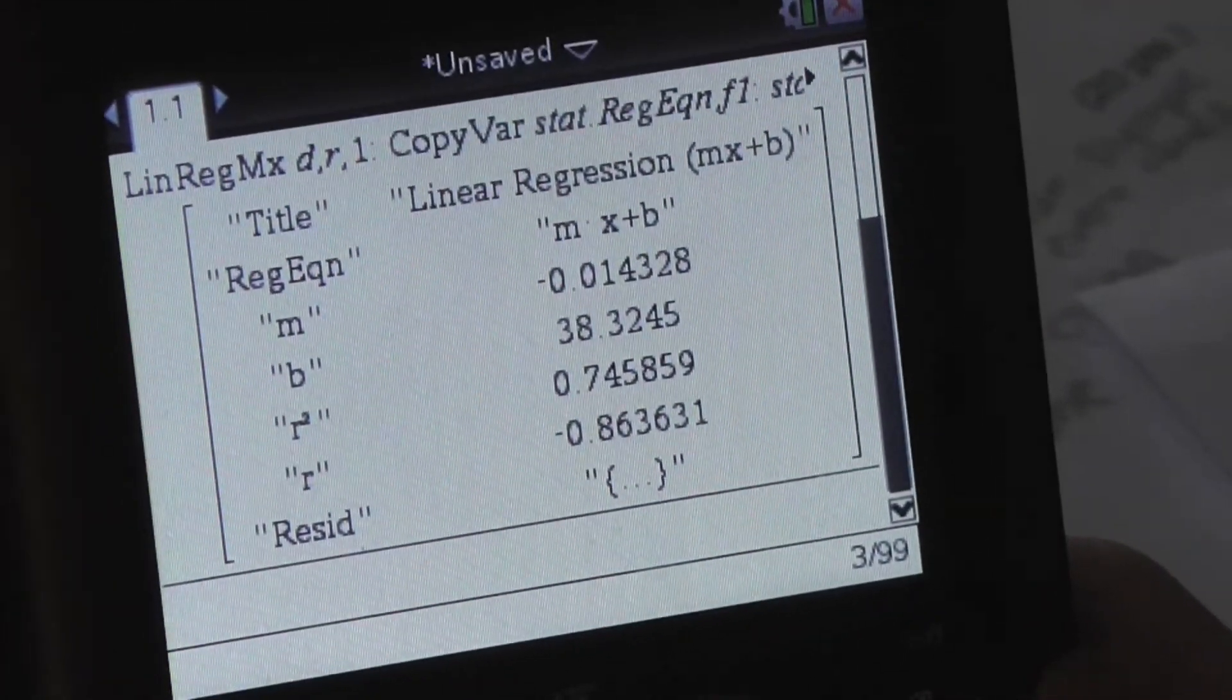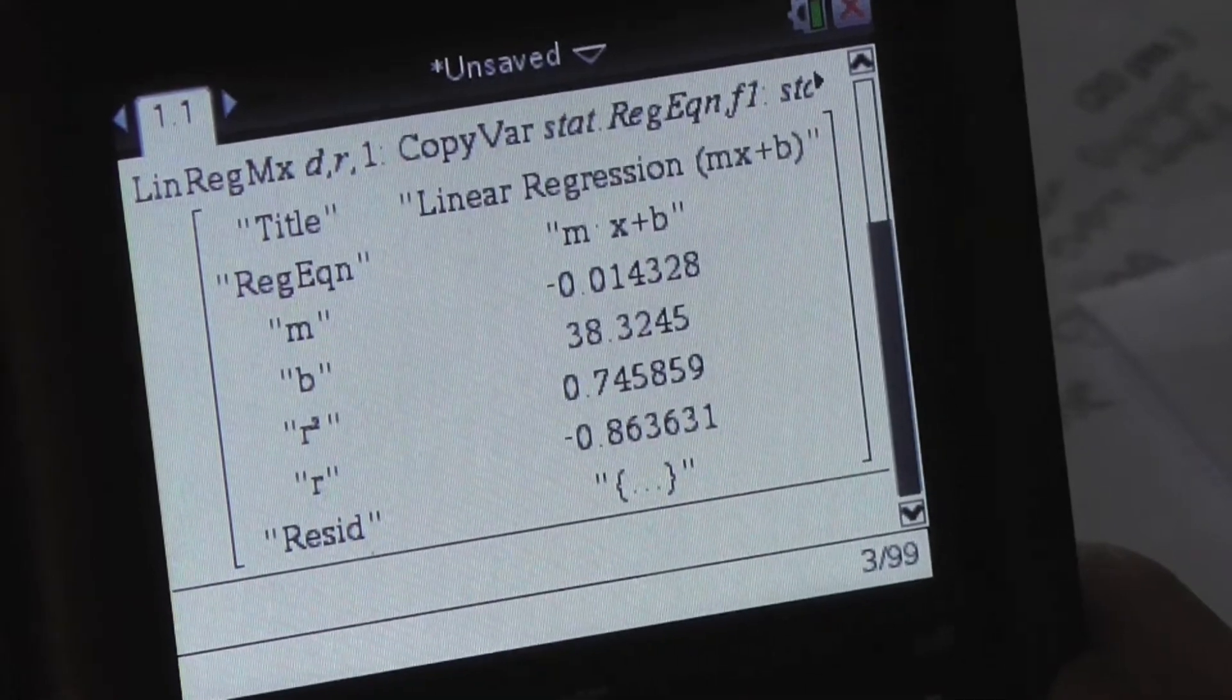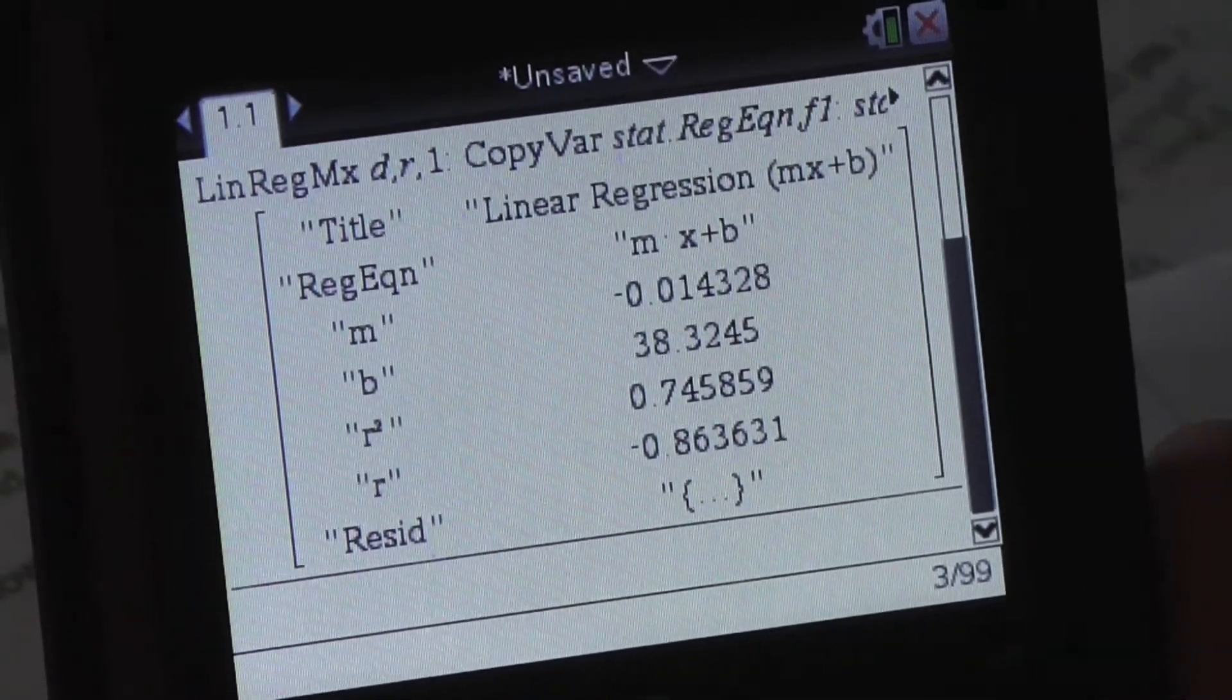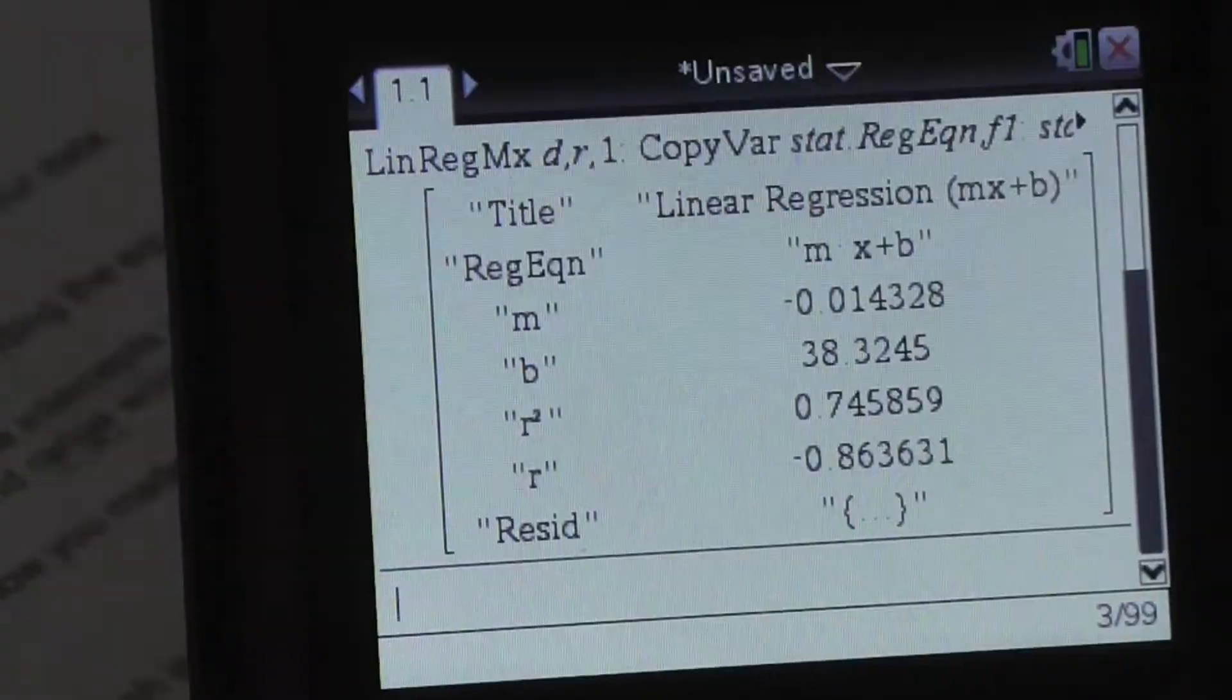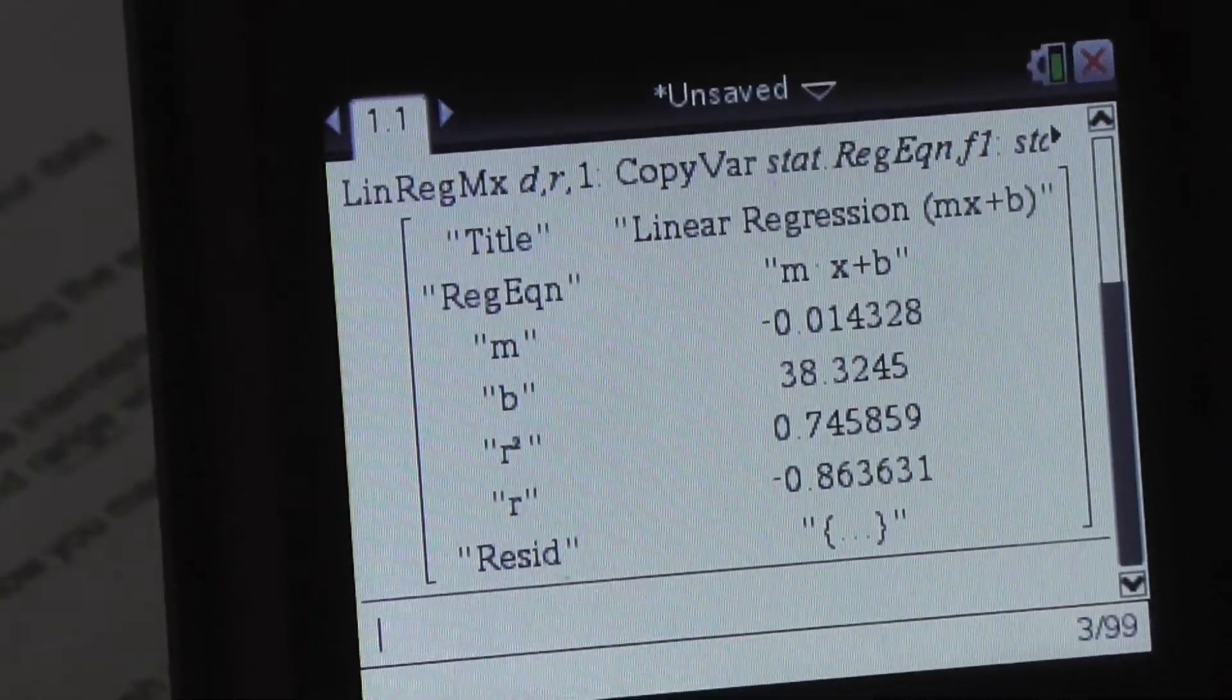Now you'll have some information about your linear regression, including slope, y-intercept, along with the residual and the residual squared. You want your residual to be as close to number one as possible.